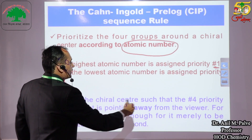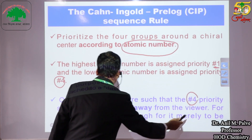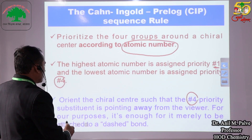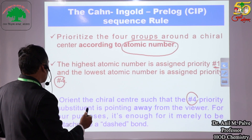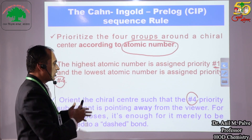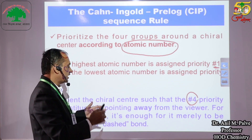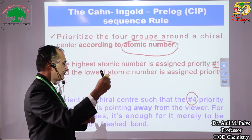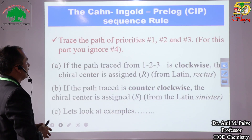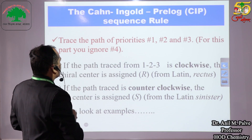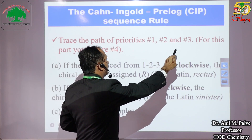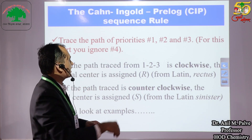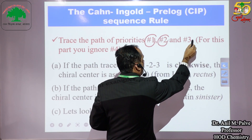Then orient the chiral center such that the fourth priority substituent is pointing away from the viewer. For convenience, the fourth priority group should be attached to a dash bond, meaning it is away from us as we view the molecule. After that, trace the path of priorities 1, 2, and 3 — since the fourth is away from us, you can ignore it and just trace 1, 2, 3.